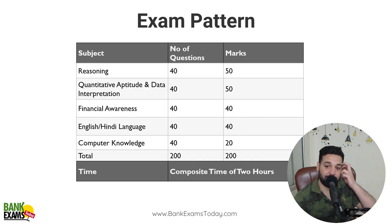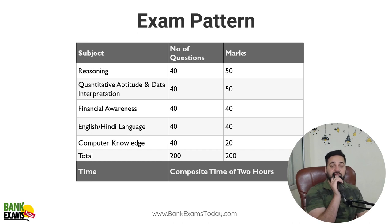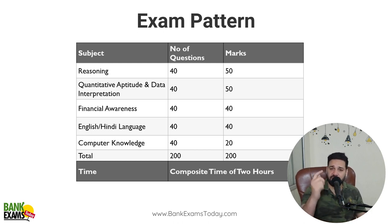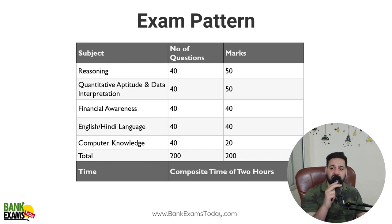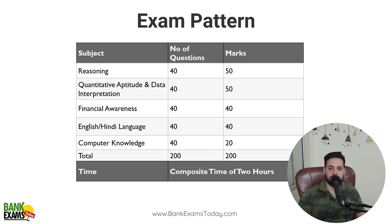Now let me go through the exam pattern. There is a sectional cutoff, and I hope you're already aware of it. The sectional cutoff is quite low — less than 10 most of the time for Reasoning and Quant. For Financial Awareness it's around 7-12, and for Computer Knowledge it's around 5-6. You should be aware of this information.